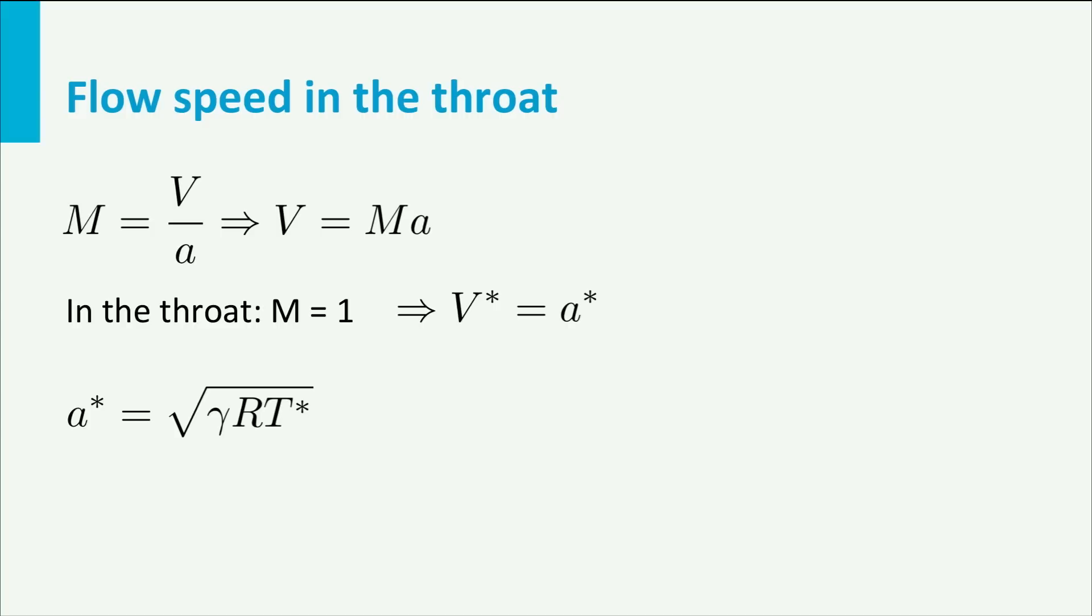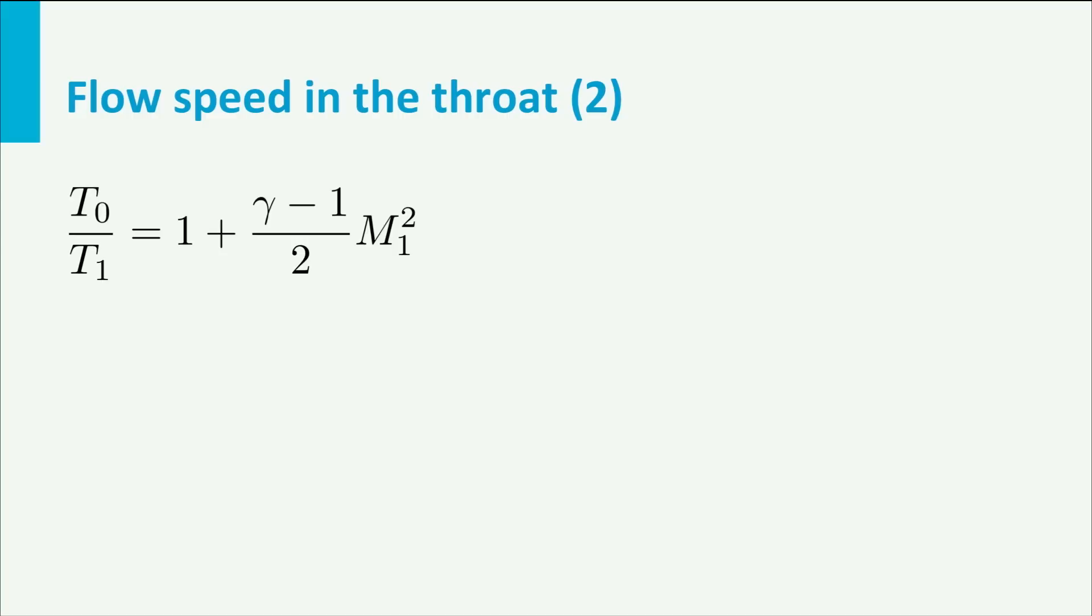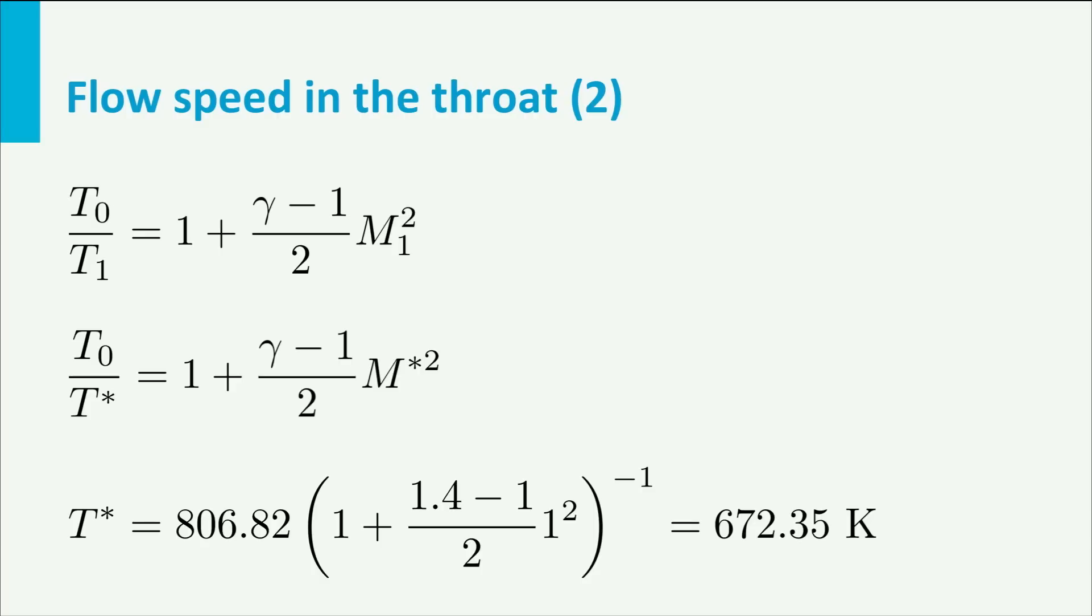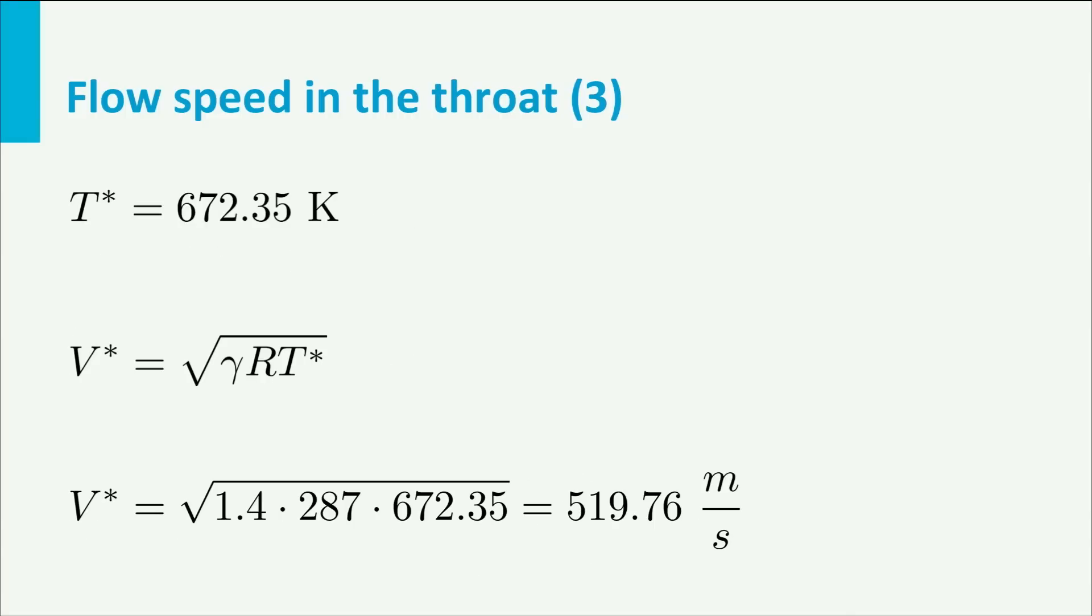So what we need to do is calculate T*. This can be done using the same equation we used under B, the second form of the isentropic relations containing the temperatures. So T0/T* = 1 + (gamma - 1)/2 × M*². M* is 1, hence if we rearrange this, we arrive at T* = 672.4 K. Now we can calculate the velocity in the throat. It equals √(1.4 × 287 × 672.35), which is 519.8 m/s.